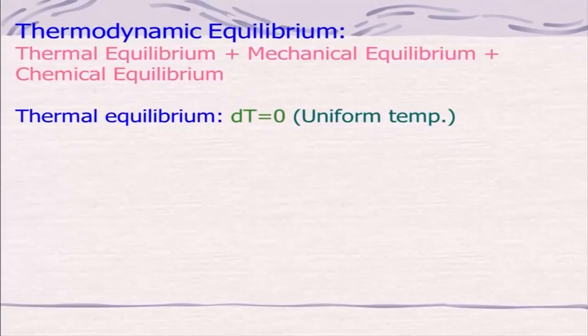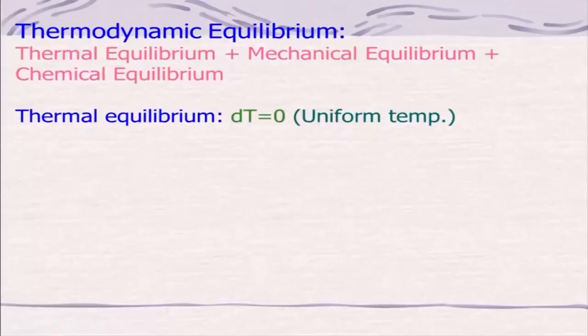A system attains thermodynamic equilibrium only when it attains thermal equilibrium, mechanical equilibrium, chemical equilibrium, and phase equilibrium. We will discuss all of these in the next lecture. I will stop here.